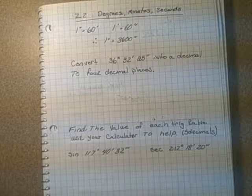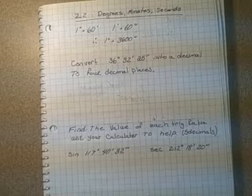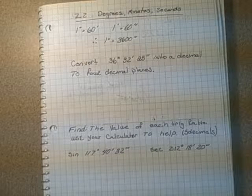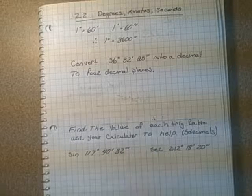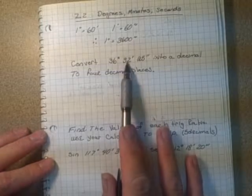There are a few basic questions that come in this area. The first type of question I have here is convert 36 degrees, 32 minutes and 25 seconds into a decimal number to four decimal places. So what we do is we put these in their fraction form.